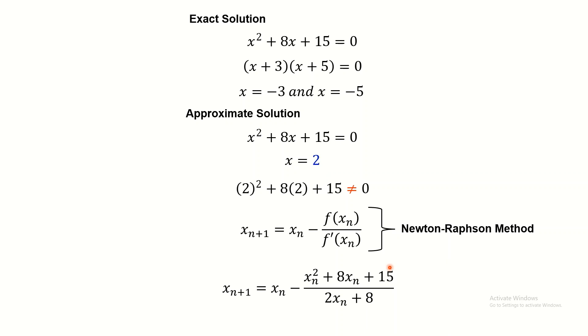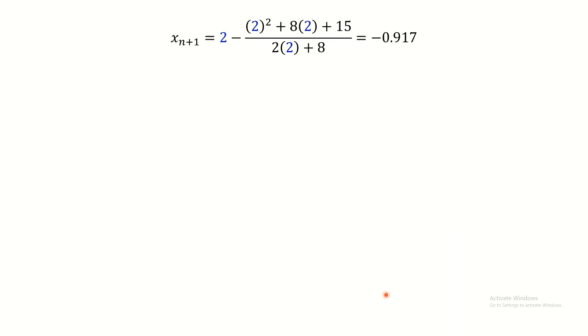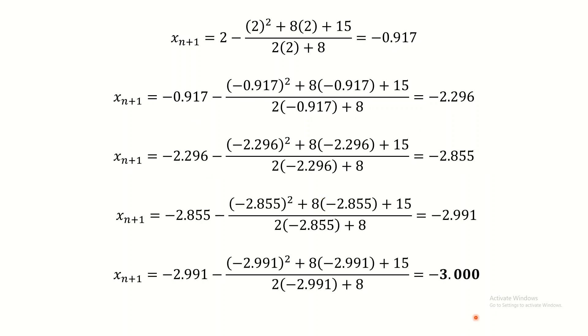So, using the Newton-Raphson method, where f of x is equal to x squared plus 8x plus 15, and the denominator is the first derivative of f of x, which is equal to 2x plus 8. So, using this equation, we can now refine our initial guess. By substituting x sub n equals 2, the refined value of x will become negative 0.917. Obviously, this value is still far away from our expected value, but if you compare it to our initial guess, it is quite nearer to the expected one. So, by continuously updating our x sub n, after a few iterations, we manage to arrive at the expected value of the root.